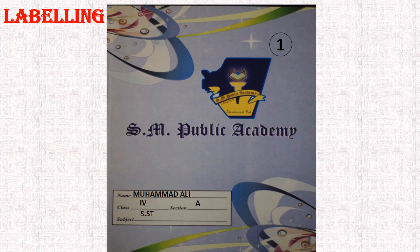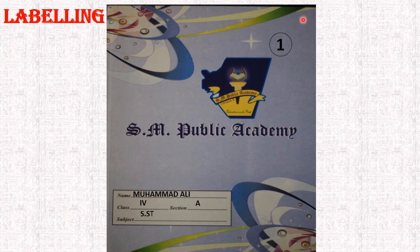So students, before starting your written work, you are going to label your classwork and homework copy. This is your SST classwork and homework copy. It is a 4-line interleaf copy. You are going to write your name, class, section and the subject. And the most important thing — write your roll number which has been given to you with your result. That is all for today's lecture. The next chapter which we will start is Communication. Till then, stay home, stay safe and study hard. Take care and Allah Hafiz.